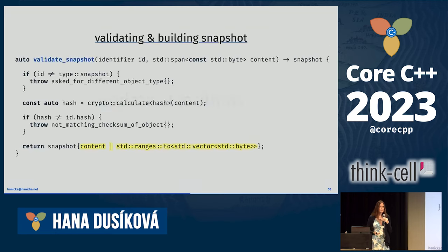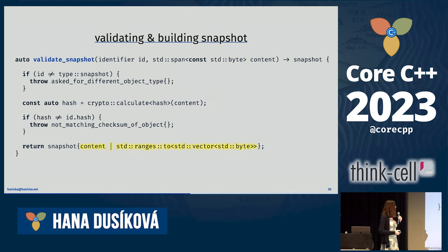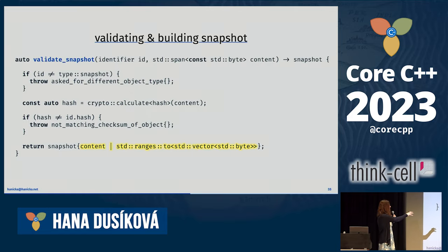Question: is the piping just like std::copy? It's RNGs piping — content is a span, so I pipe it into std::ranges::to which materializes it into a vector of bytes.